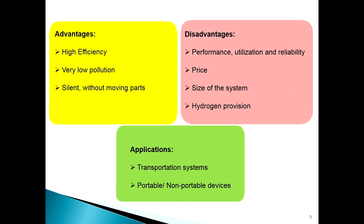The advantages of the fuel cell system include its high efficiency and very low pollution. It is silent and has no moving parts. However, there are disadvantages regarding performance, utilization, and reliability. Its price can be high, the system size should be large, and it requires a hydrogen supply from other sources.